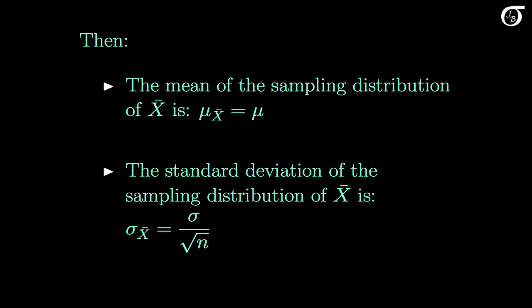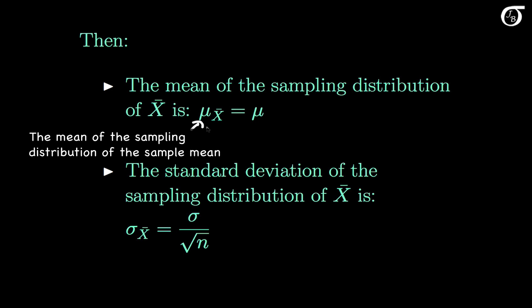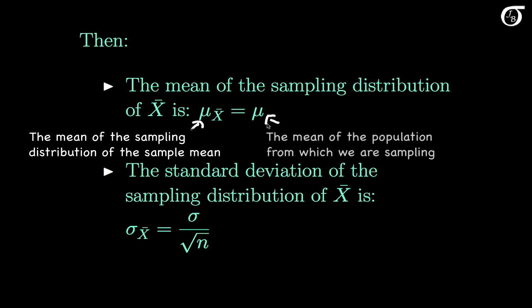Here are two important characteristics of the sampling distribution of X bar — I'm stating them without proof here, but I do have a video in which I derive these properties. Mu sub X bar is notation for the mean of the sampling distribution of X bar, and that is equal to the mean of the population from which we are sampling. In other words, the expectation of our random variable X bar is equal to mu, the mean of the population from which we are sampling.